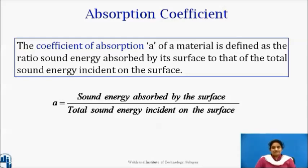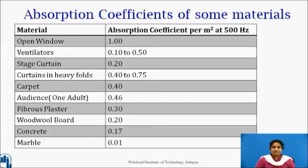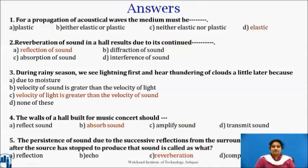In order to compare the relative efficiency of different absorbing surfaces, a standard must be selected. A unit area of open window is selected as the standard, as the entire sound incident on an open window is fully transmitted and none is reflected. Thus, the unit of absorption is the open window unit, which is named as Sabine, after the scientist who established the unit. This table shows some of the materials and their absorption coefficients. Students, now pause the video and try to answer these questions. Check for the correct answers.